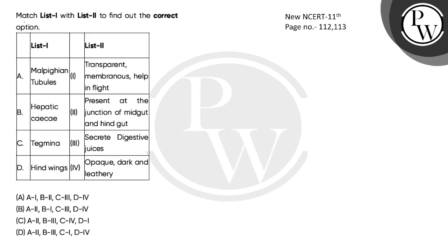Hello kids, let's read this question: match List 1 with List 2 to find the correct option. List 1 contains Malpighian Tubule, Hepatic Caeca, Tegmena, and Hind Wings.